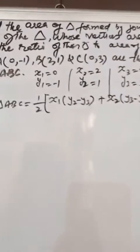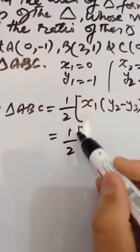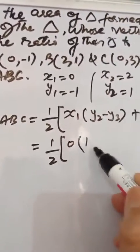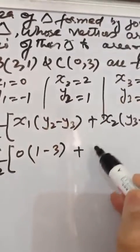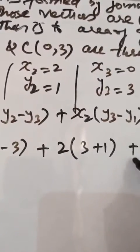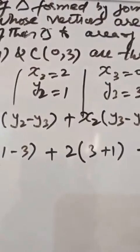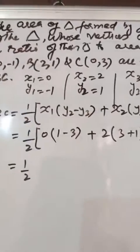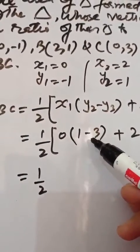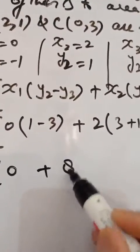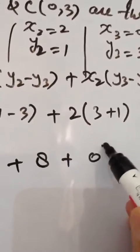Now substituting the values: x1 is 0, y1 is -1, x2 is 2, y2 is 1, x3 is 0, y3 is 3. Area = 1/2 |0(1 - 3) + 2(3 - (-1)) + 0(-1 - 1)|. This equals 1/2 |0 + 2(4) + 0| = 1/2 |8| = 4.